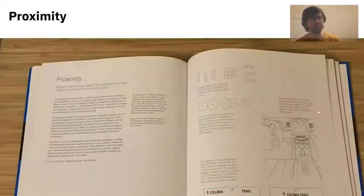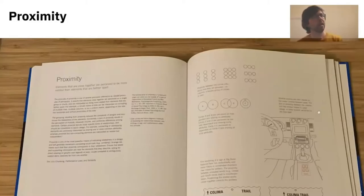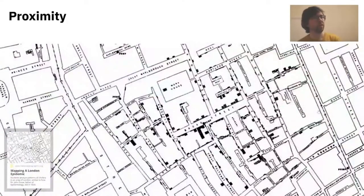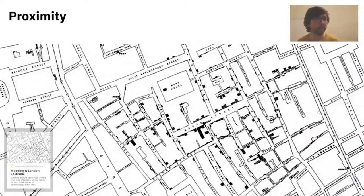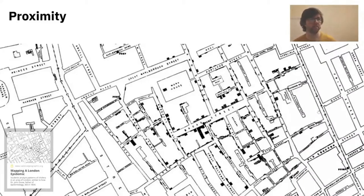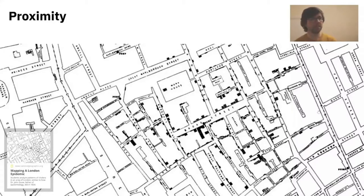Another great example is proximity. Things grouped together in close proximity are usually perceived as a group. There's a nice story from the 1850s of Dr. John Snow during the cholera pandemic in London — he decided to map cases of cholera onto the street map, and the clusters that emerged made them realize there was a single water valve spreading the disease. Sealing off that well made the disease go away.